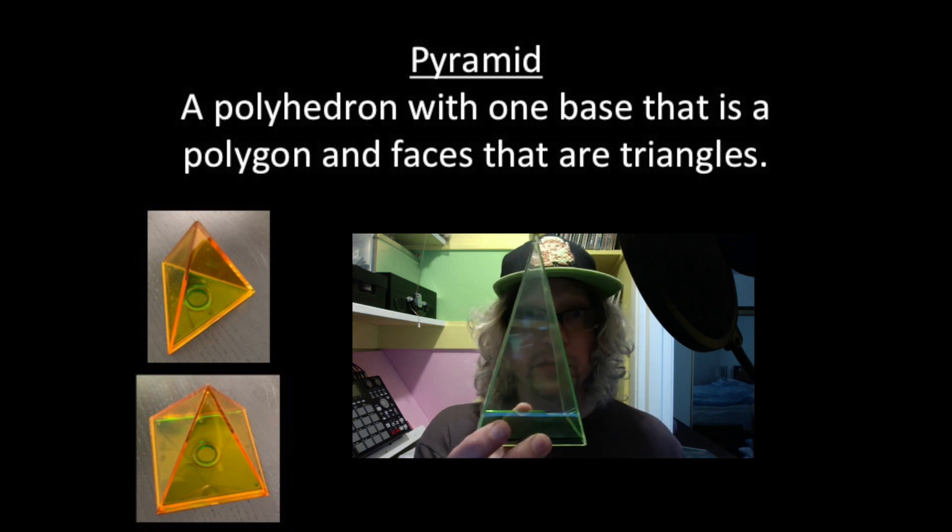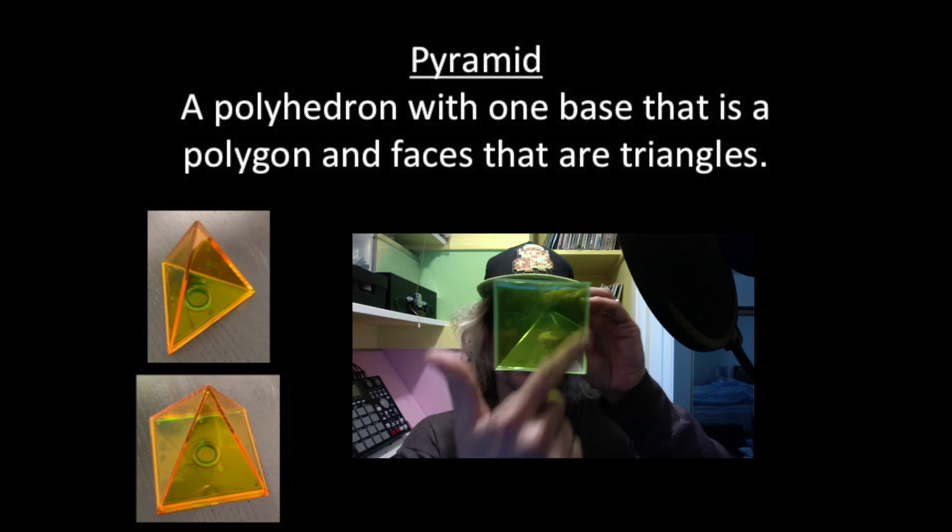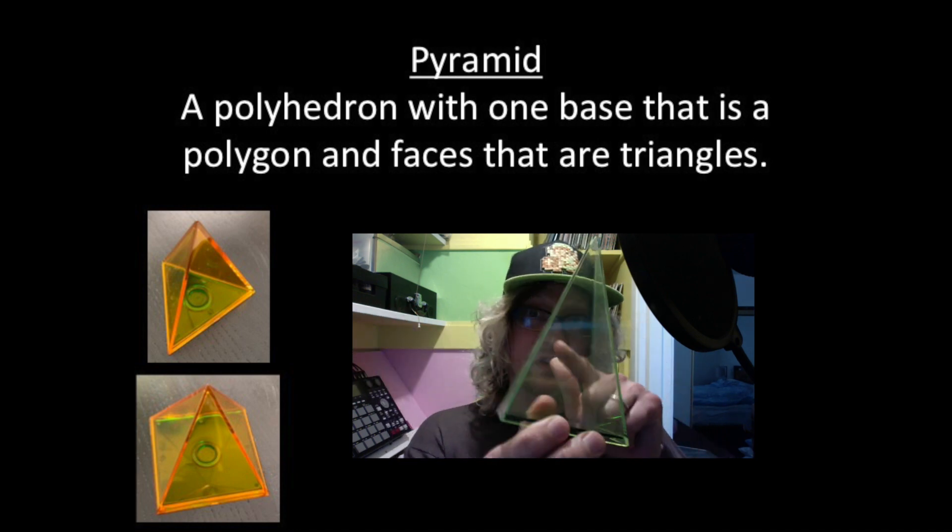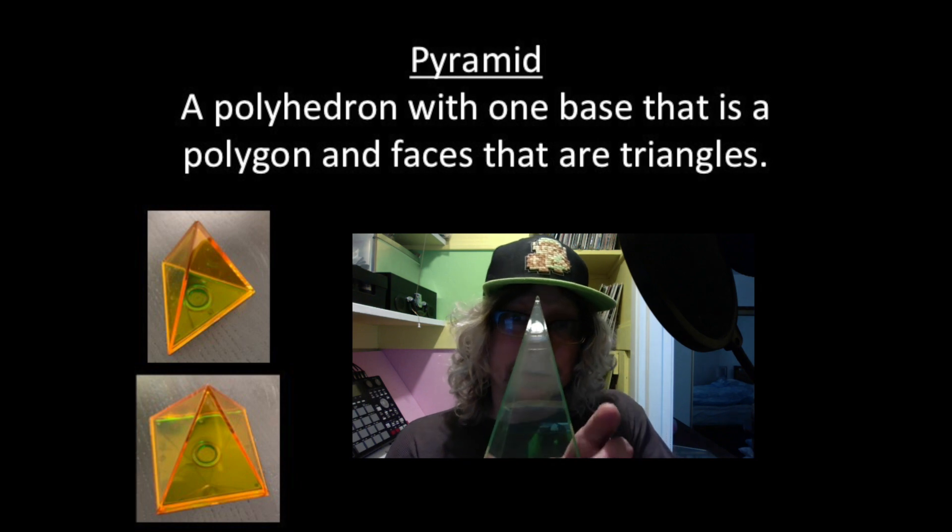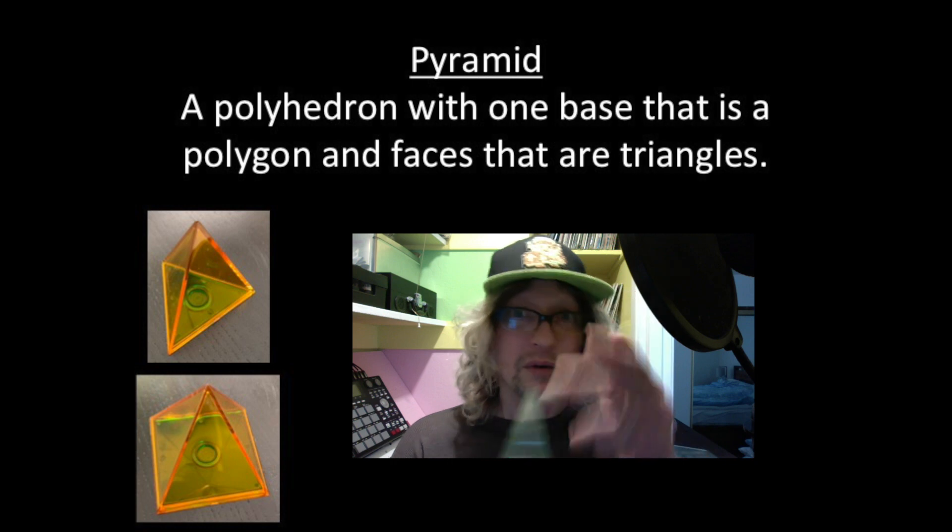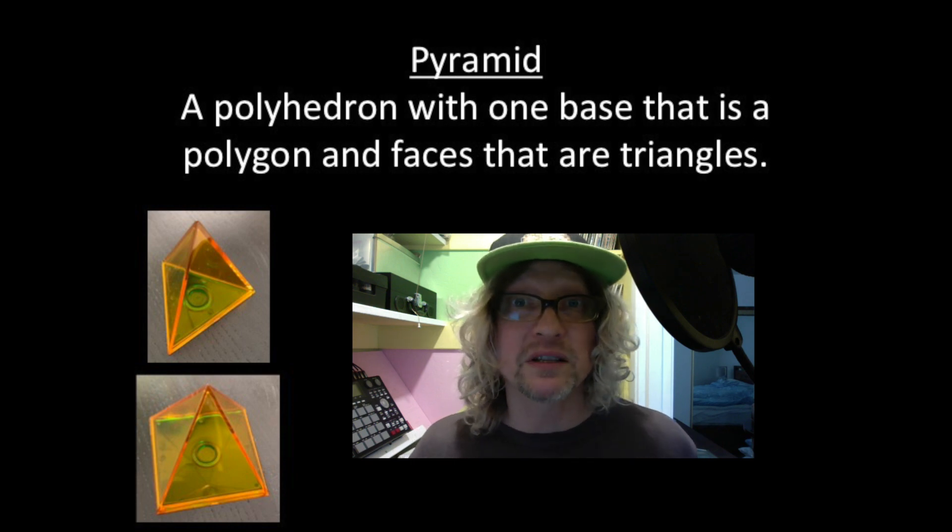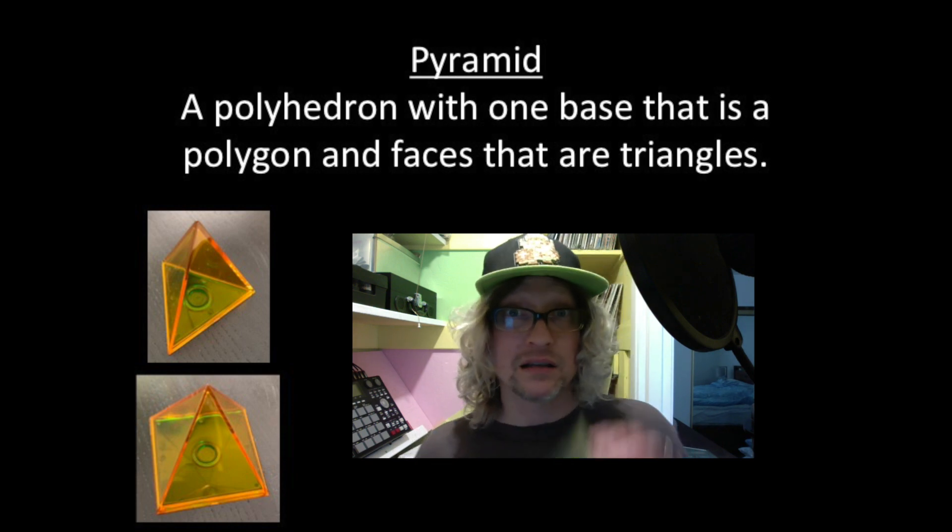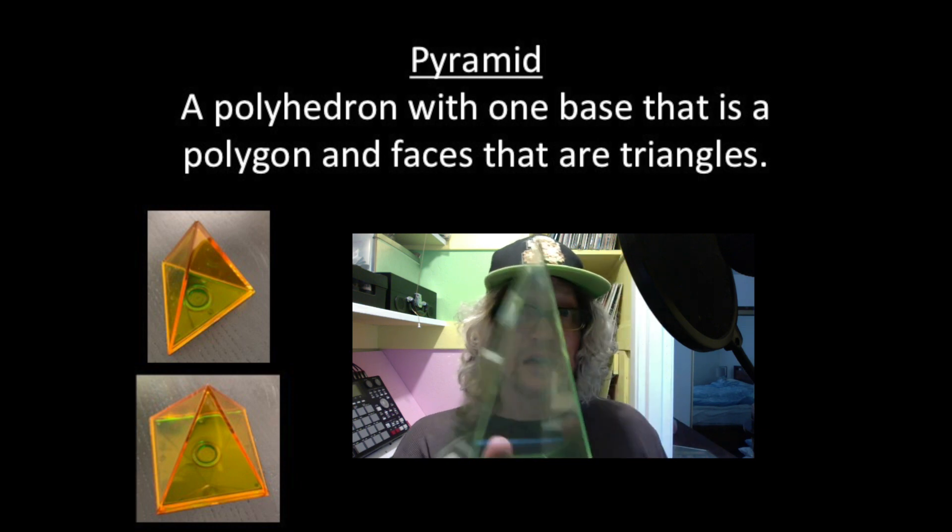So let's take a look at this pyramid for example. We have a base down there. The base is a polygon and all these faces are triangles. Now I like to think of pyramids as having a base and then all the edges go up to a point at the top, but this is probably a better definition. Just like prisms, we name pyramids after their bases. So this has a rectangular base. We would call this a rectangular pyramid.